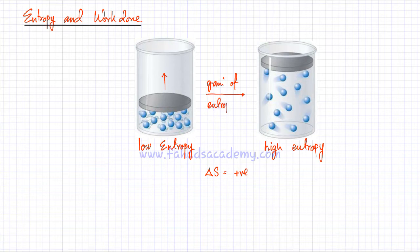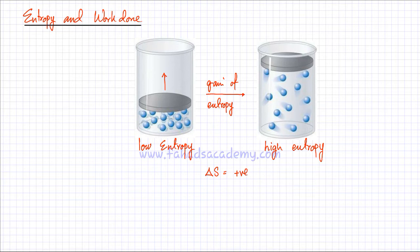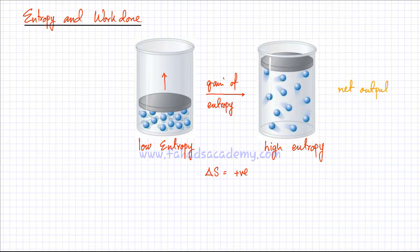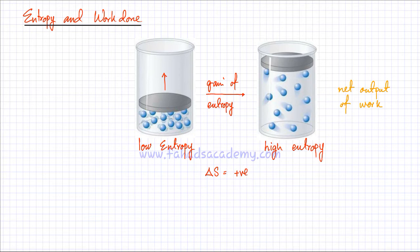Whenever entropy is gained, the work done is by the system. If you look at the plate, no external work was done — all the work done to push this plate upwards was provided by the particles themselves. So no external work was done and there was a net output of work. Whenever delta S is positive and systems move from low entropy to high entropy, all the work done is by the system — no external work is done, and these systems are capable of producing energy.